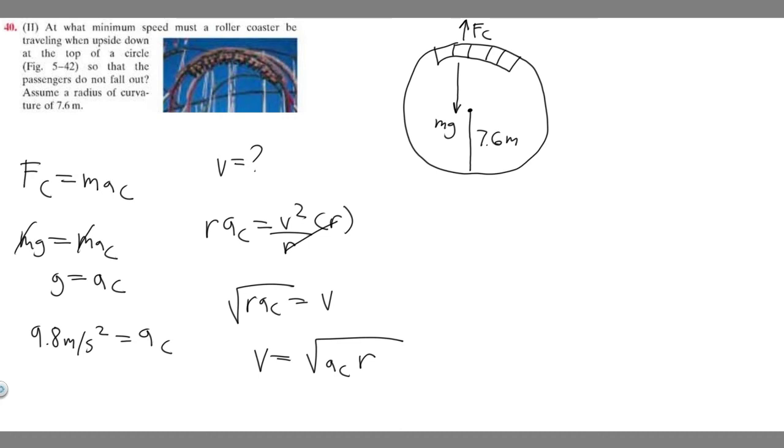Now what we're going to do is just go ahead and solve. We know A sub c is equal to 9.8 because they have to be equal. So plugging it in, square root of 9.8 times the radius, which they told us in the beginning, 7.6. So our velocity is going to be equal to the square root of 9.8 times 7.6. If you go ahead and do that, you're going to get it equals to 8.63.